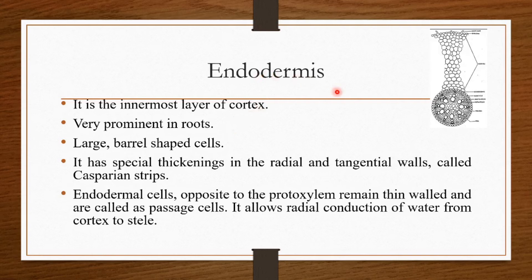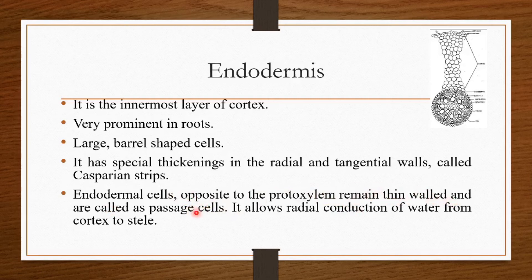Next is the endodermis. It is the innermost layer of the cortex and is a very prominent structure in roots compared to the stem. It has large barrel-shaped cells with special thickenings in the radial and tangential walls called Casparian thickening or Casparian strips. The endodermis cells opposite to the protoxylem remain thin-walled and are called passage cells. These passage cells allow radial conduction of water from the cortex to the stele region.